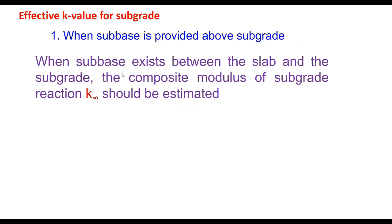AASHTO guide is available to apply these three corrections to effective k value of subgrade reaction. The first one is when subbase is provided above subgrade. Subbase exists between the slab and the subgrade, and the composite modulus of subgrade reaction k_infinite should be estimated.